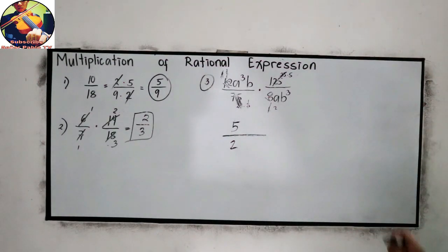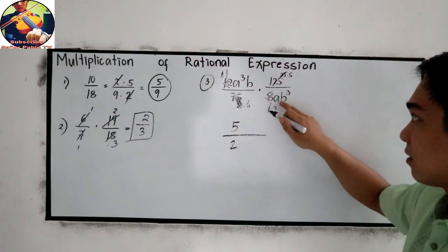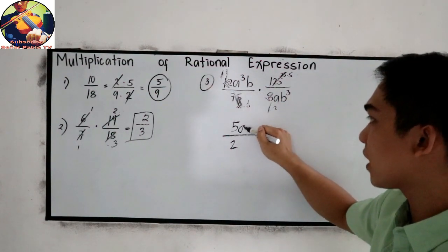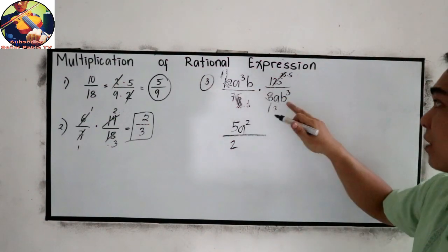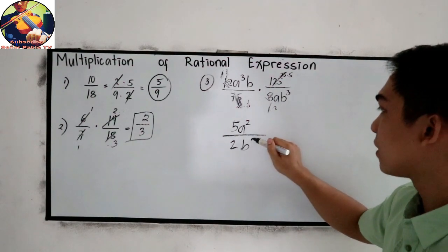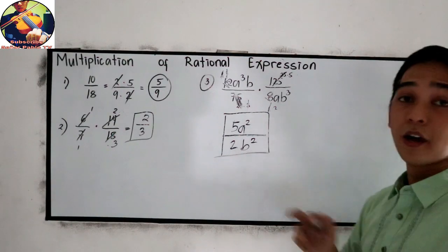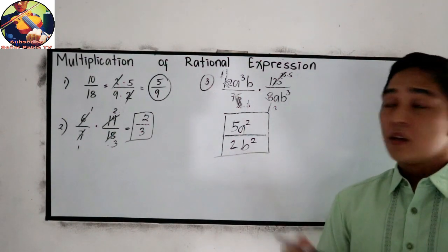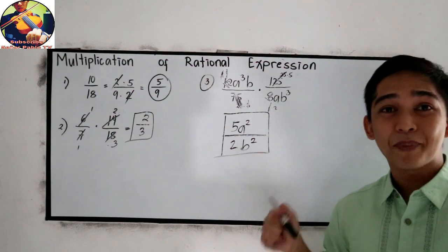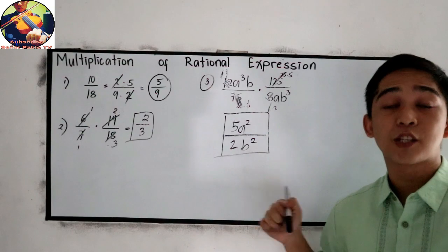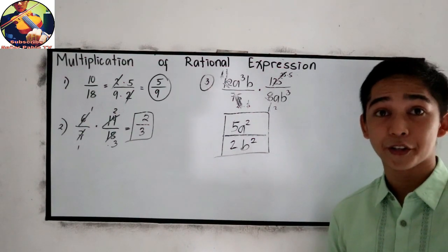Next, proceed to our variables. A³ divided by A, our numerator now is A². And B divided by B³, this will become B² in the denominator. And this is now our final answer. If you want, you can recall our topics in Laws of Exponents. That is your grade 7 lesson, 3rd quarter grade 7.